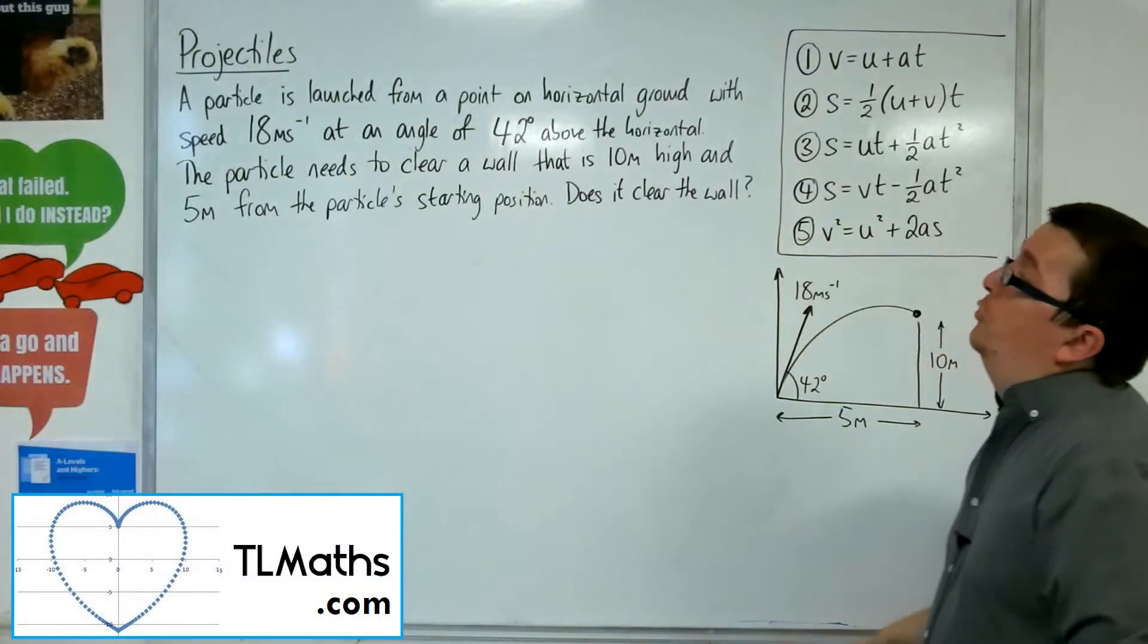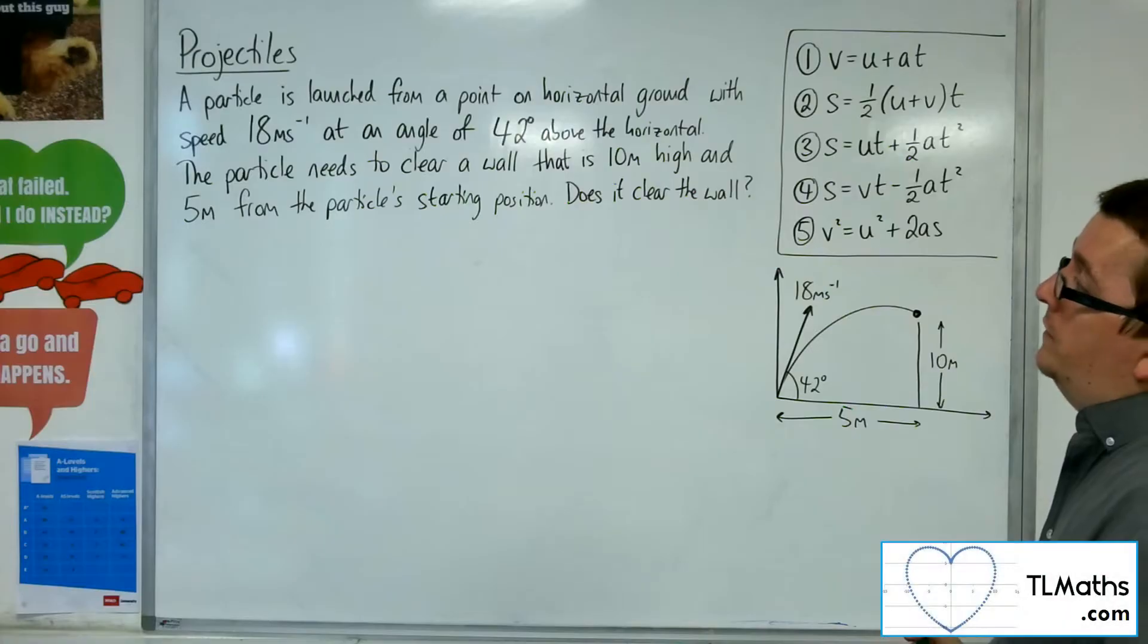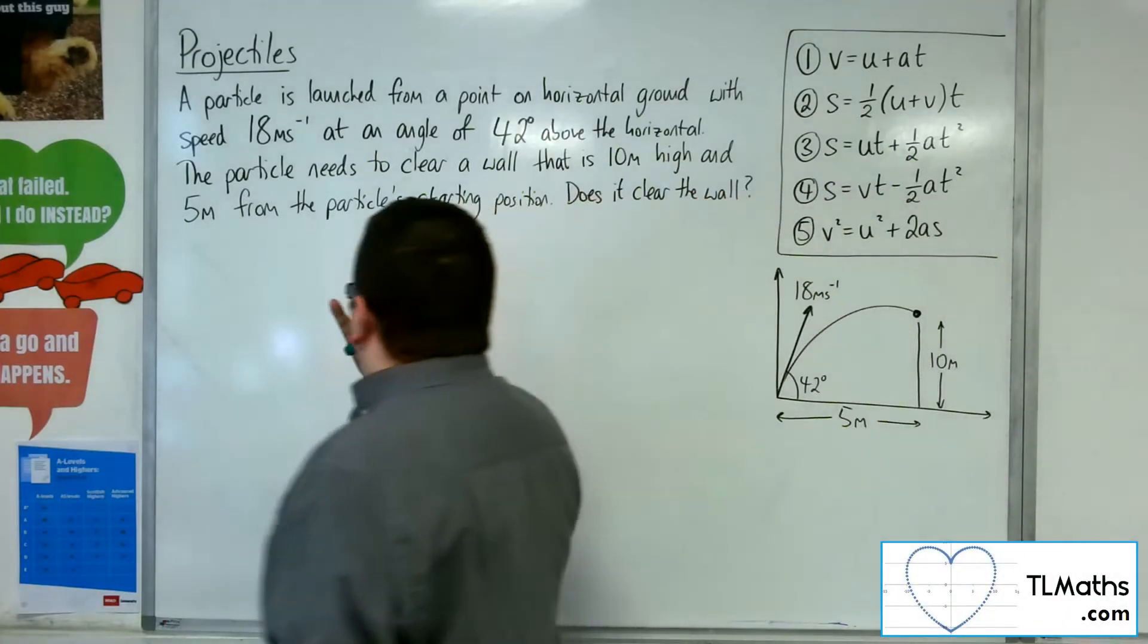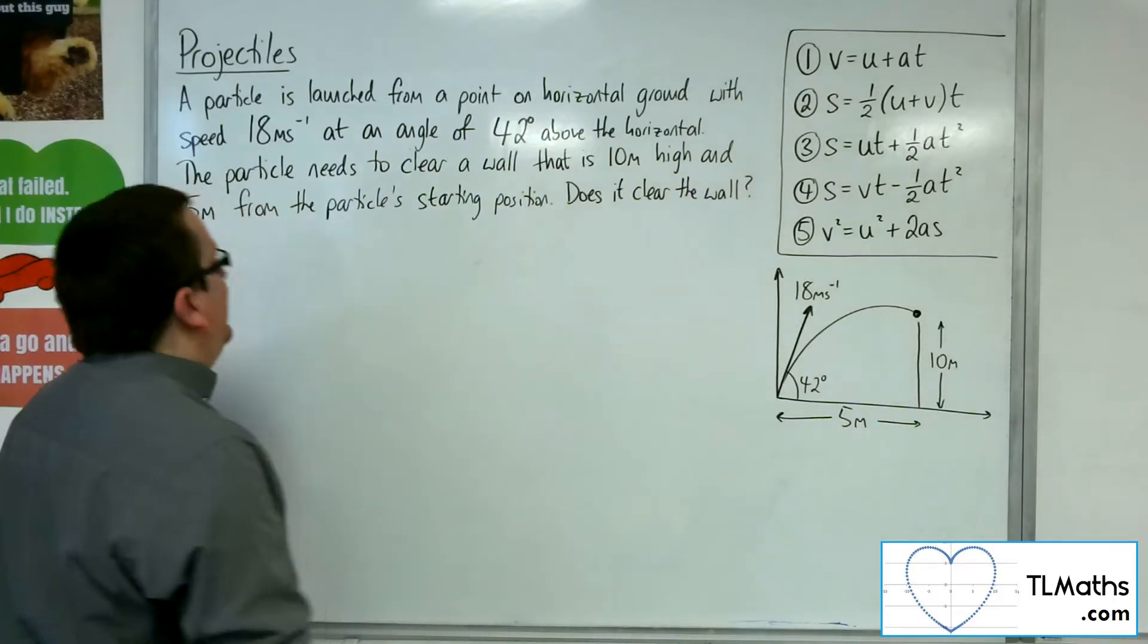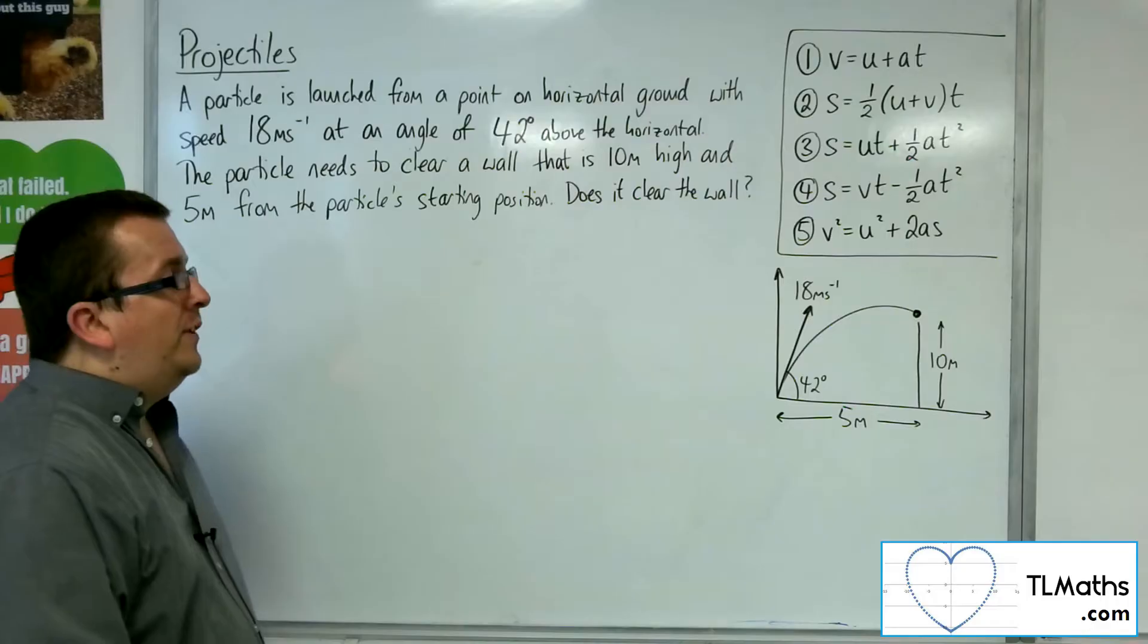In this video, a particle is launched from a point on horizontal ground with speed 18 metres per second at an angle of 42 degrees above the horizontal. The particle needs to clear a wall that is 10 metres high and 5 metres from the particle's starting position. Does it clear the wall?